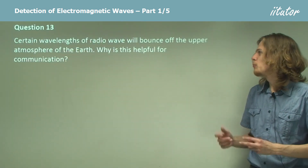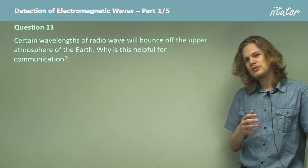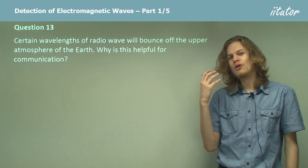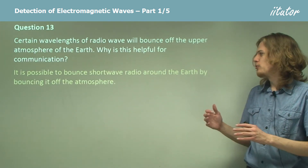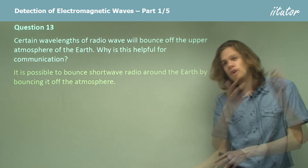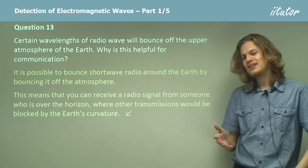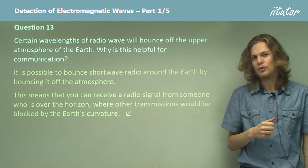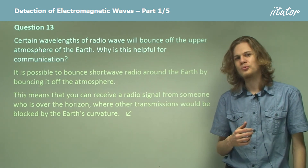Certain wavelengths of radio wave will bounce off the upper atmosphere of the Earth. This is helpful for communication because it lets us get around the curvature of the Earth, which would normally block transmissions from going over the horizon. By firing shortwave radio up at the sky and bouncing it back down to the ground, we're able to send a signal around the world without it having to go through the Earth. This means we can send shortwave radio over the horizon to very distant receivers indeed.